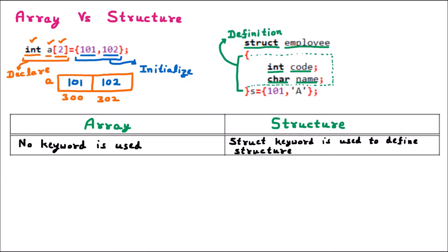After the definition, we declare the structure variable by writing 's'. This 's' is the declaration of the structure variable. When we declare 's', it is of structure type and this structure has two elements. The first element is 'code', which is of integer type, so one memory block is reserved. Let's say its address is 701.